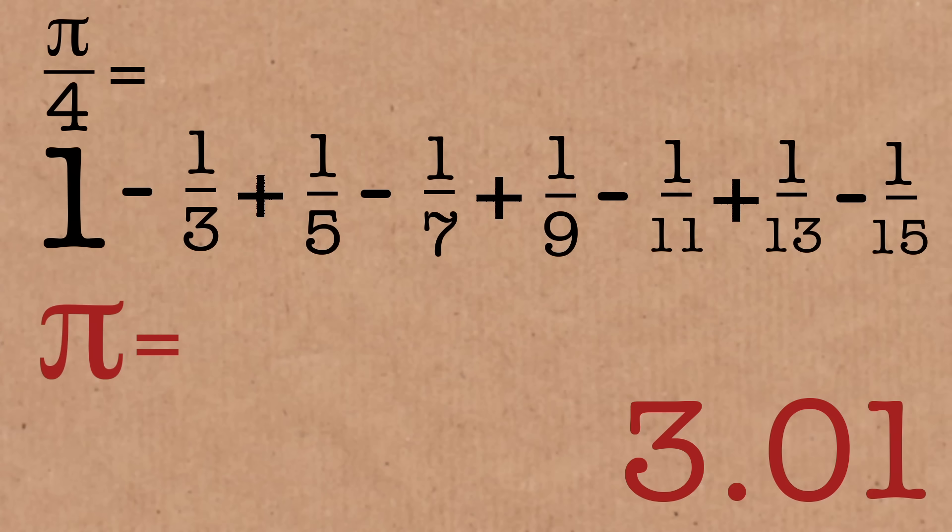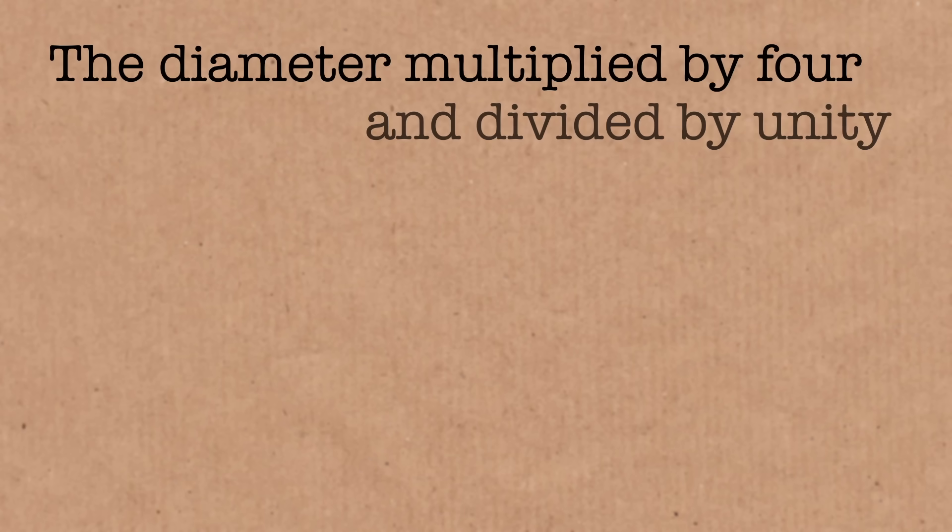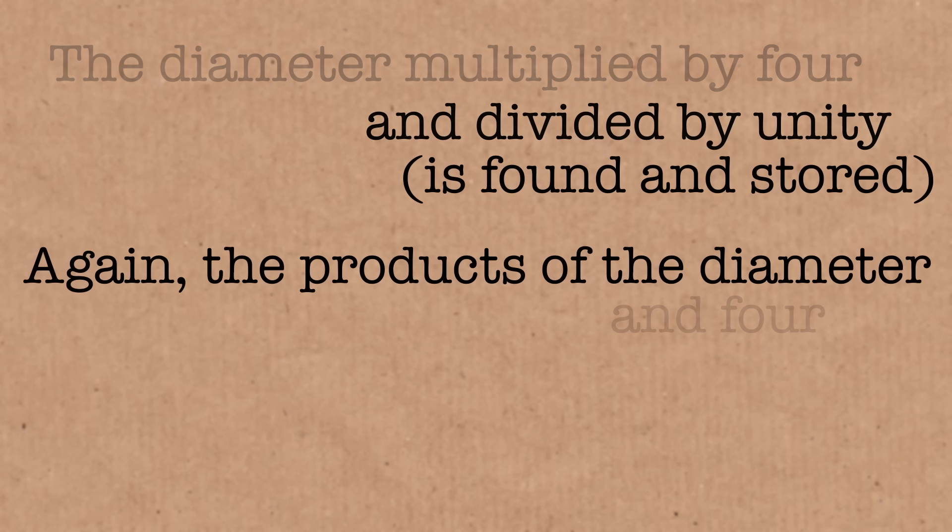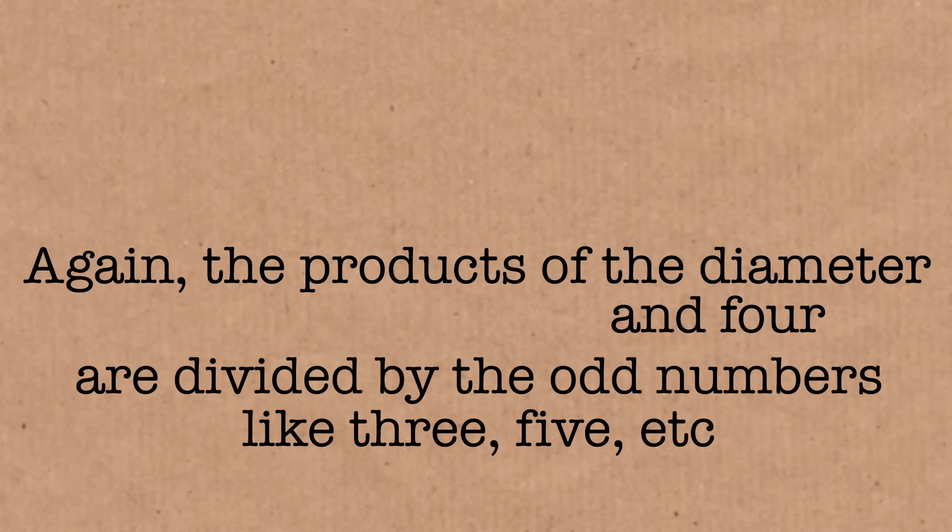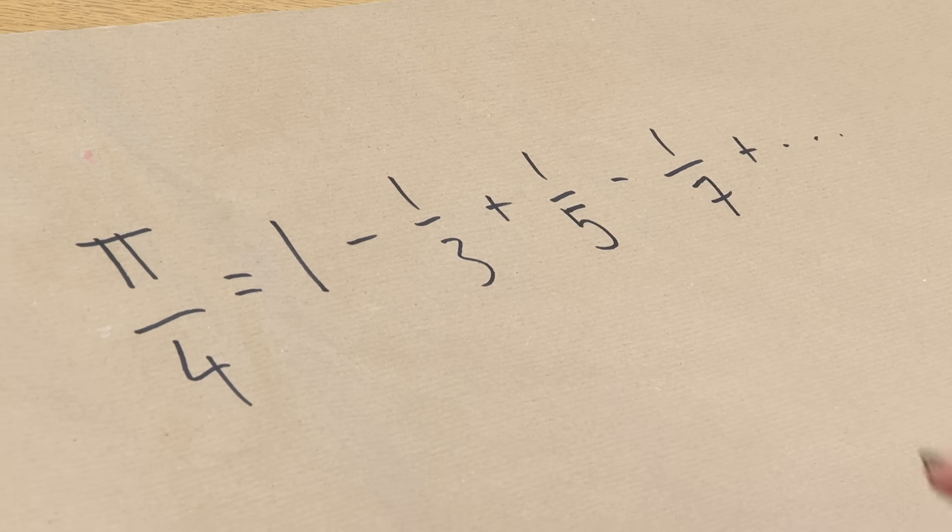So actually, one of the cool things about how Madhava represented this, he didn't write it down like this. He actually wrote it in verse. So I can read you the verse as he wrote it. He said, the diameter multiplied by 4 and divided by unity is found and stored. Again, the products of the diameter and 4 are divided by the odd numbers, like 3, 5, and so on, and the results are subtracted and added in order to the earlier stored result.